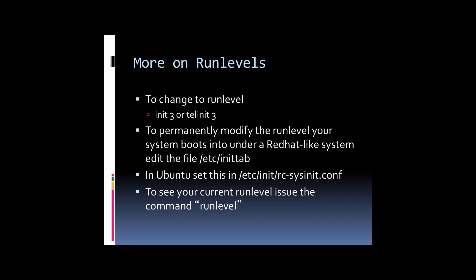You can change from one run level to another using the command init or telinit. If I wanted to switch from run level 2 to run level 3, I would type init 3. If I wanted to go to run level 1, I would type init 1. The init command, when you have root privileges, allows you to change a machine's active run level.